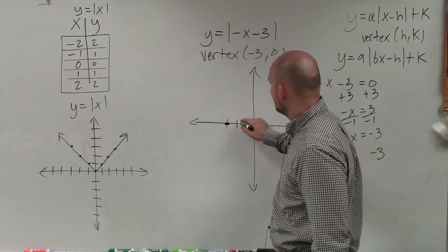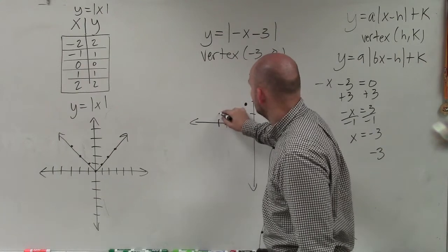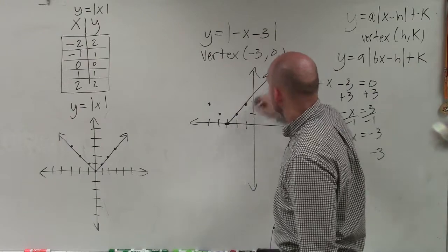And now I'm just going to go over 1, up 1. Over 2, up 2. Over 1, up 1. Over 2, up 2. And then it's my equation, so I can just go ahead and graph.